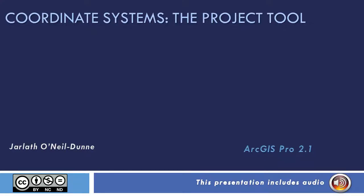In this tutorial we showed you how to use the project tool to transform the coordinate system of a data layer from a geographic coordinate system to a projected coordinate system. This was necessary because we wanted to measure the length of all trails within the state of Vermont, and a geographic coordinate system is not suitable for measurements, so we needed to have our data in a projected coordinate system.